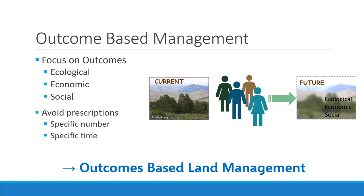Much of the emphasis on outcome-based management is an effort to avoid prescriptions. For example, when people renew a grazing permit, what's typically in that permit is the number of animals and what seasons they can graze. That doesn't always make sense — some years there's abundant vegetation and you need more animals to reduce fuel hazard; other years there's very little biomass and numbers need to be reduced. There might be a late spring where a time prescription doesn't make sense. Outcome-based management focuses on how grazing under whatever conditions influences ecological, economic, and social outcomes — being flexible and adaptive.